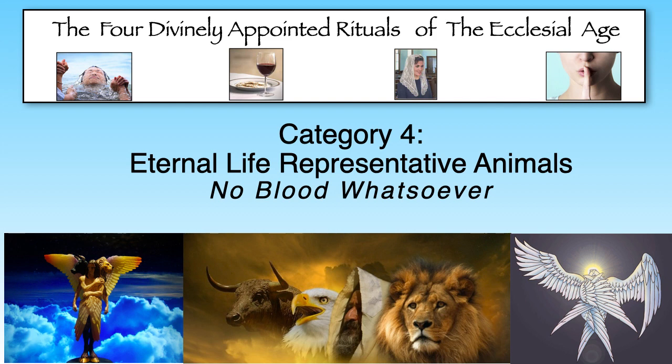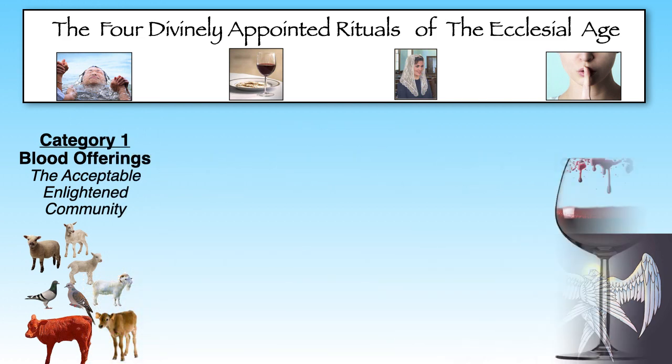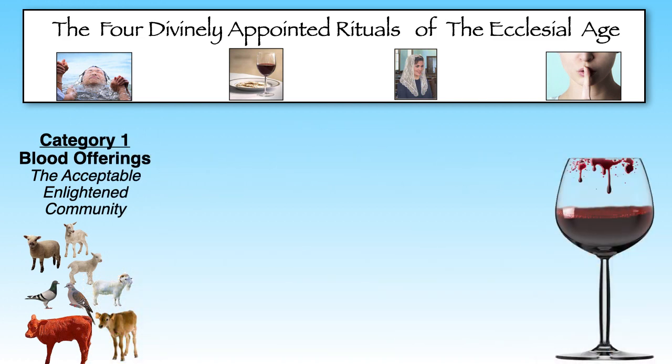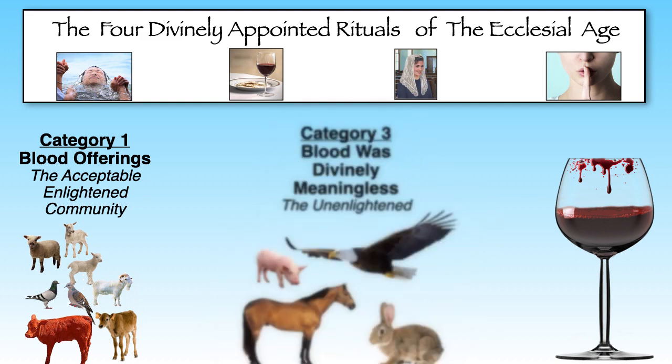We've identified those eight sacrificial animals as representing those acceptable to God within the enlightened community. We've identified the third blood category under the laws of the first kingdom of God — those unclean beasts representing the unenlightened community whose blood was meaningless. Therefore, their lives are not meaningful to God from an eternal perspective. These people are not accountable to the judgment of Jesus Christ and die forever when their bodies expire.